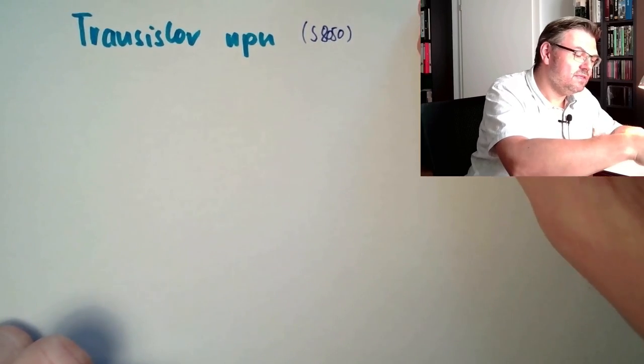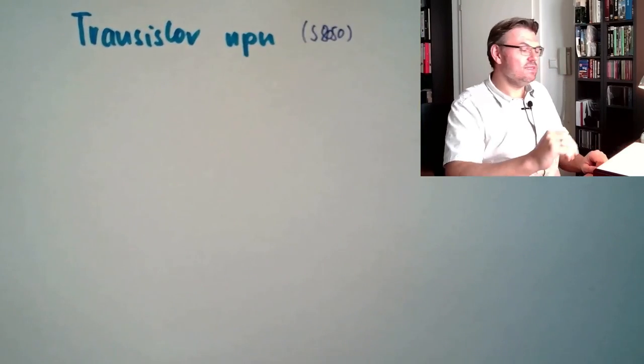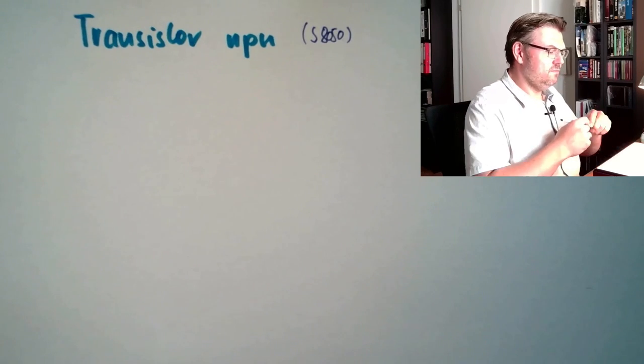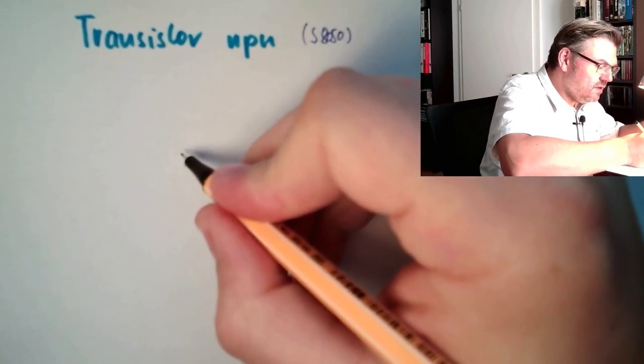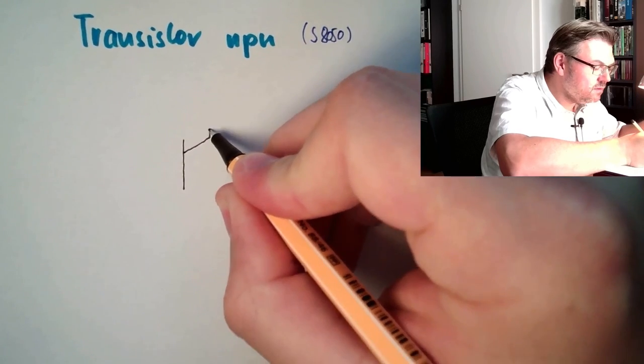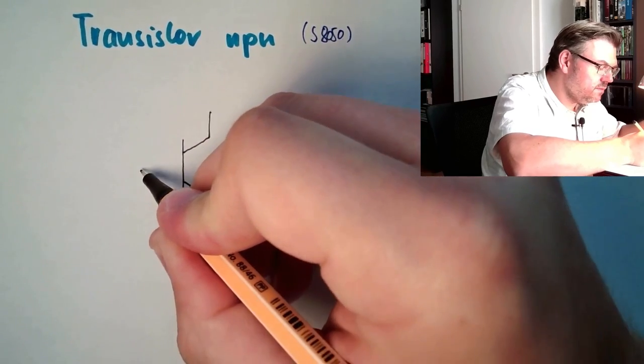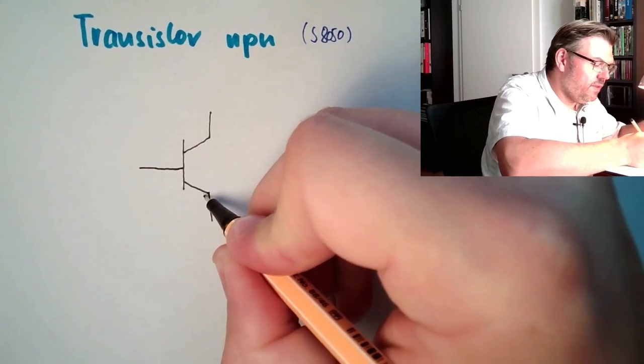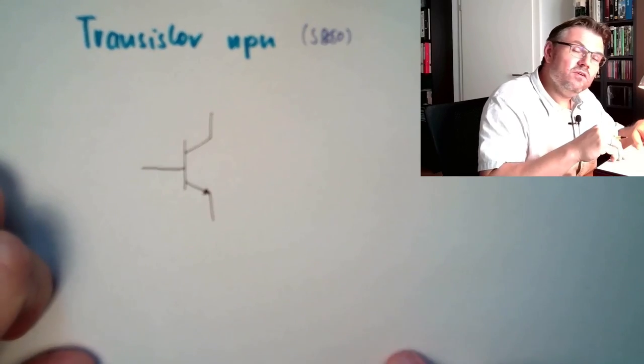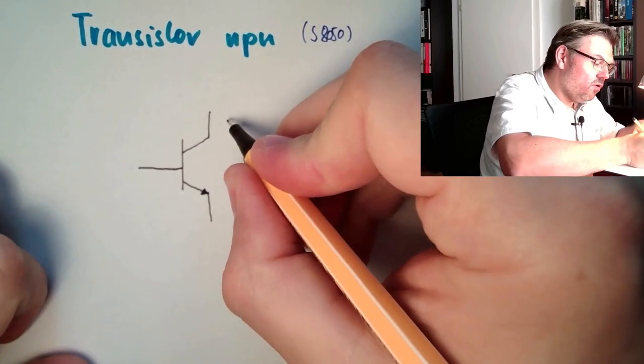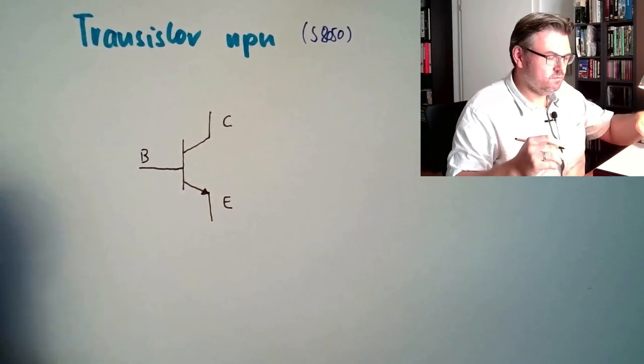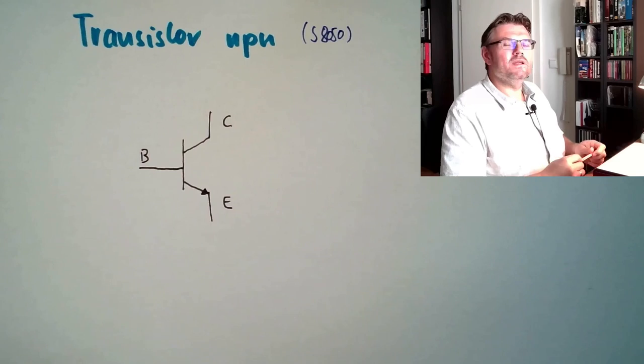Now, what is a transistor? If we draw now the symbol of a transistor, the transistor symbol looks like this. And an NPN transistor is marked like this. This is a transistor. These are the three connectors. What does a transistor do?